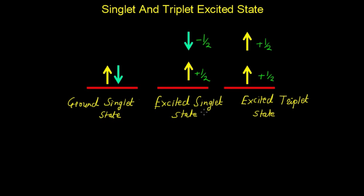Excited singlet state and excited triplet state can be derived with the help of the multiplicity rule. The multiplicity rule is 2S plus 1, and using this equation we can calculate whether it is a singlet or triplet excited state.